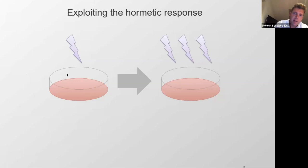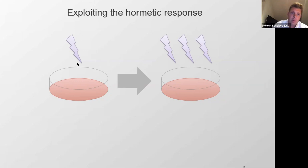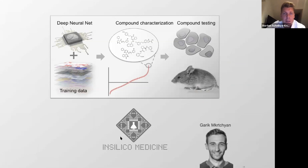If you treat cells with a certain stress and the cell survives, it becomes more resistant to subsequent stresses. This is called the hormetic response. If you irradiate cells with low-dose gamma radiation, the cells will become more resistant to radiation in the future. We explored this by looking at drugs that would mimic radiation-induced damage to elicit this response artificially, but without inducing DNA damage. This was done in collaboration with Interlocal Medicine.